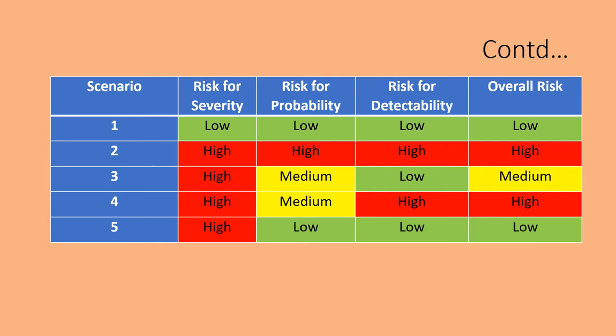See scenario 4. The risk for severity is high and risk for probability is high, meaning the severity cannot be detected so easily. So the overall risk is high.